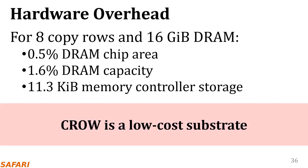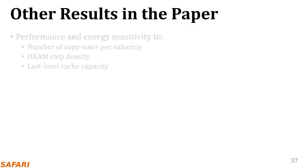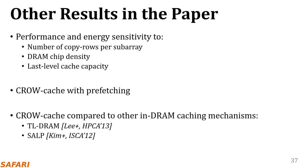CROW incurs modest overheads in the DRAM and the memory controller when using a configuration with eight copyrows per subarray. Please see the paper for a more detailed hardware overhead evaluation, sensitivity studies to the number of copyrows per subarray, chip density, and last-level cache capacity. We also evaluate CROW cache with a stride prefetcher and compare CROW cache to two prior works that also enable in-DRAM caching.